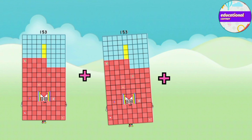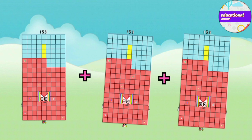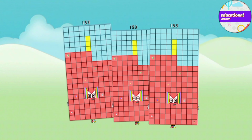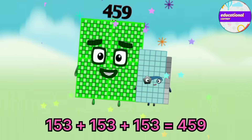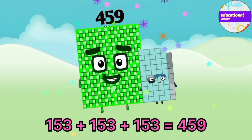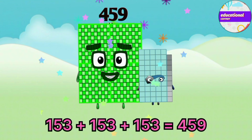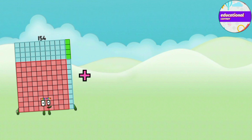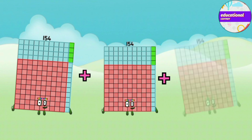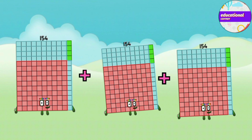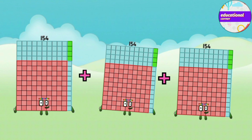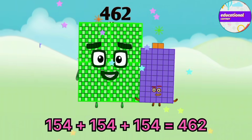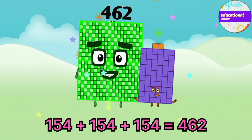153 plus 153 plus 153 equals 459. 154 plus 154 plus 154 equals 462.